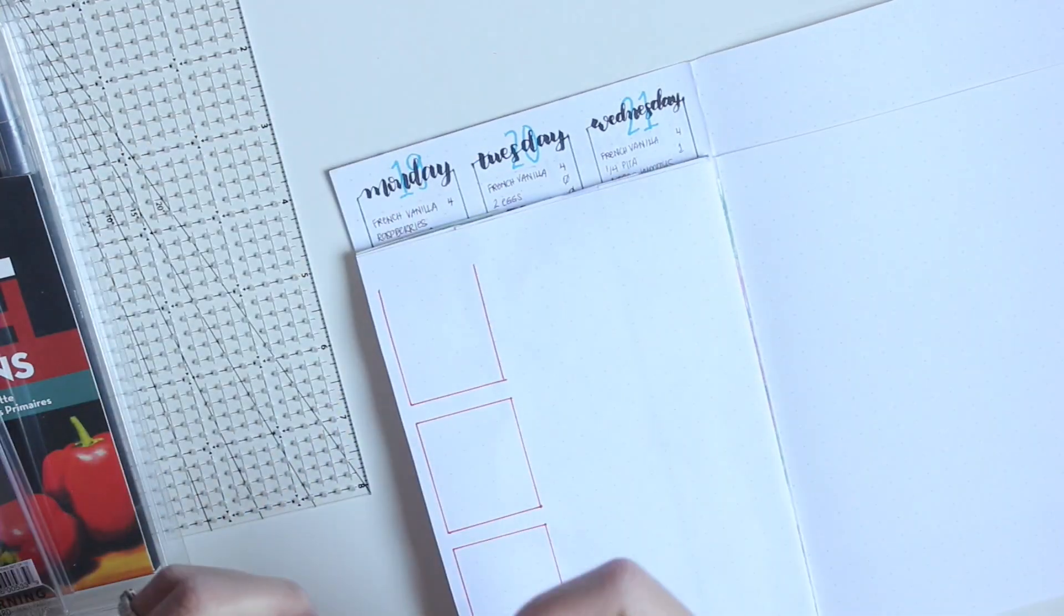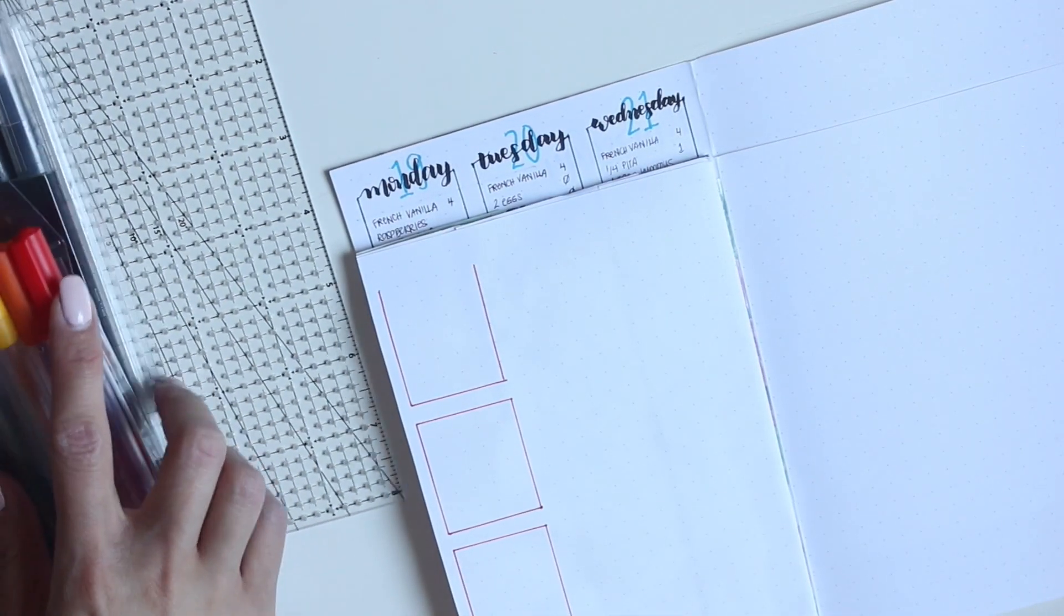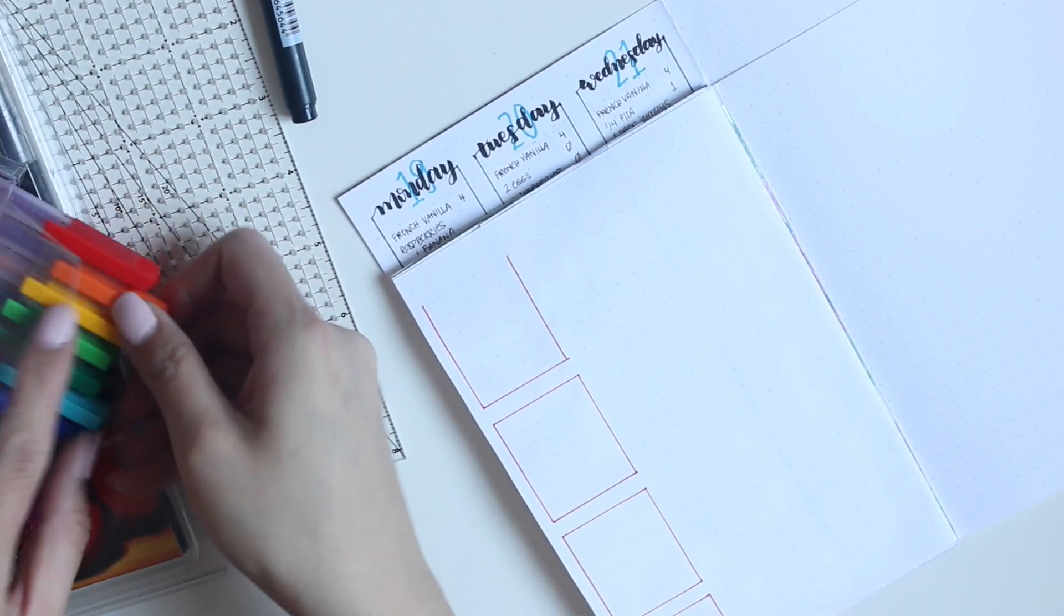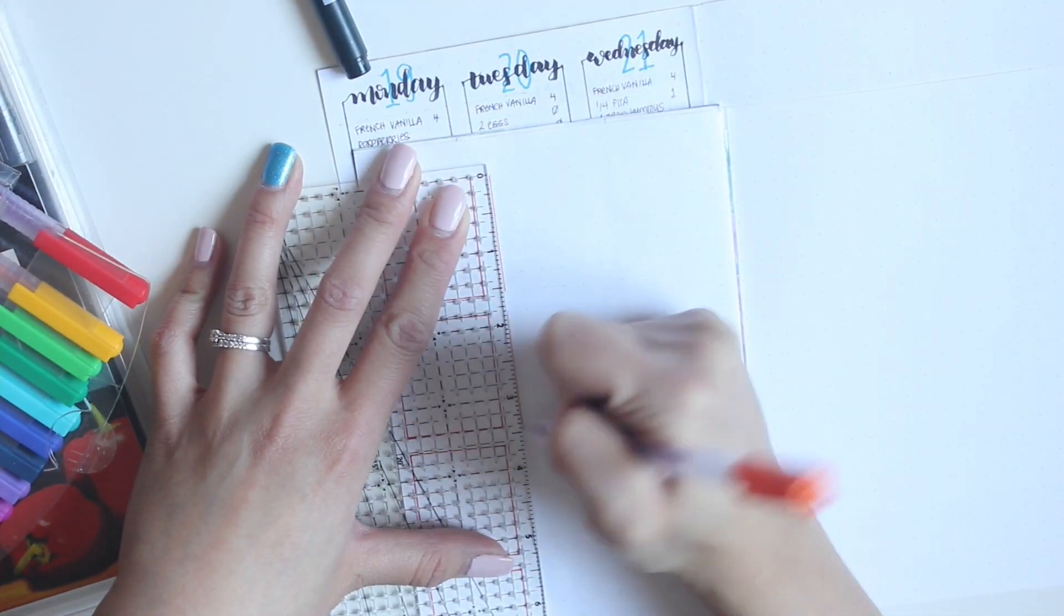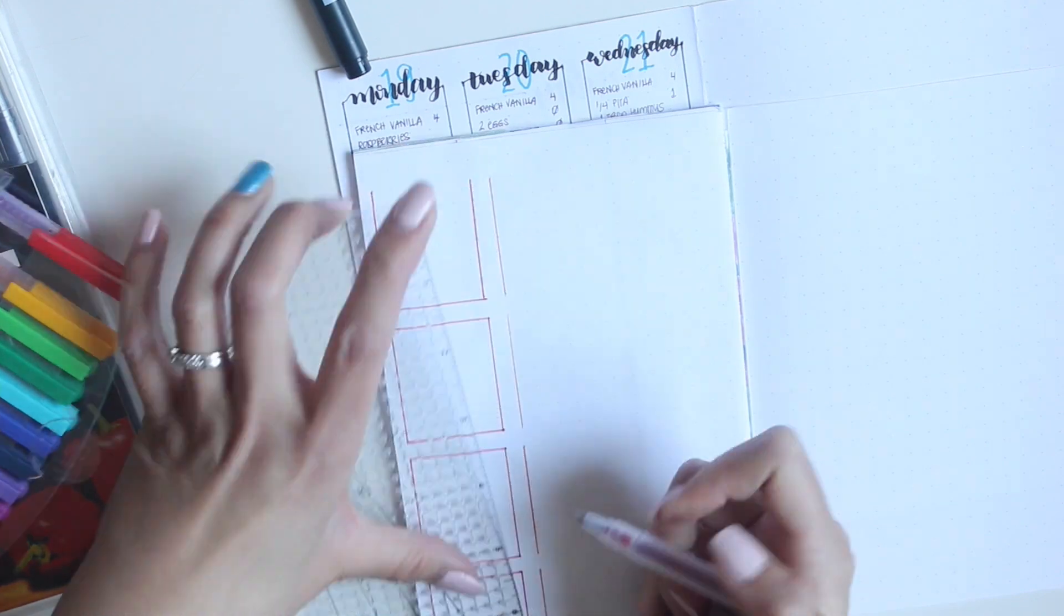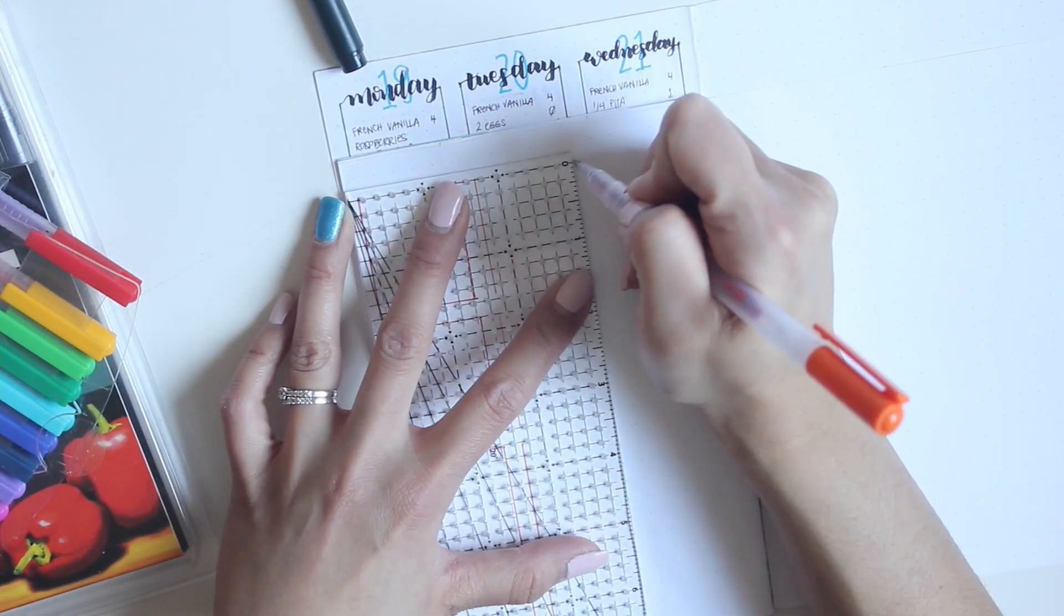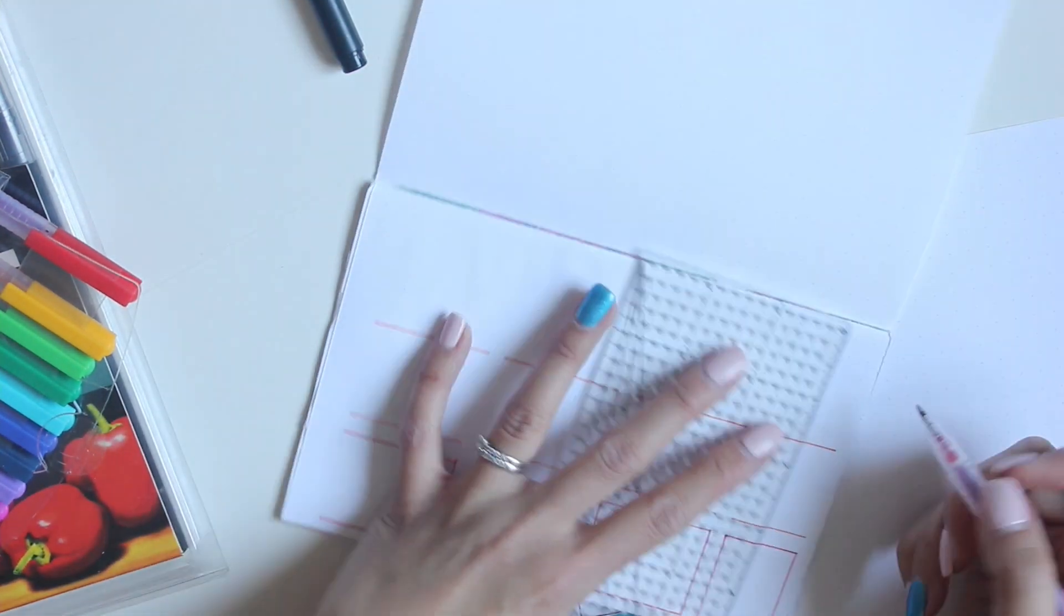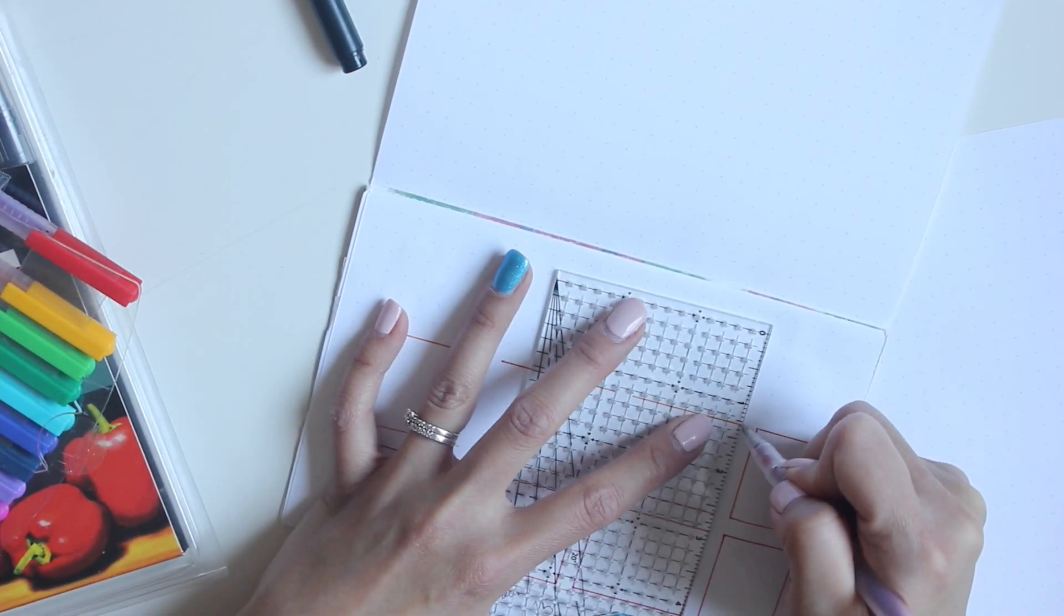But then again, part of the creative process is trying new things. So we'll see how this layout works for me, and if I can find a better layout that is more functional, then I'll give it a try. If you guys have some links to other YouTubers who do bullet journaling, especially for food tracking, please leave them in the comments below. I'd love to see their videos.